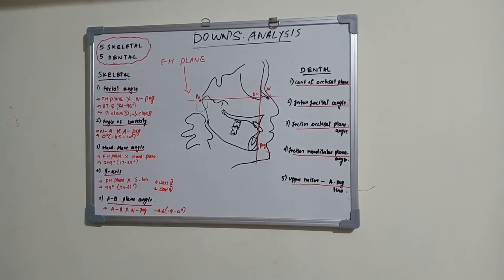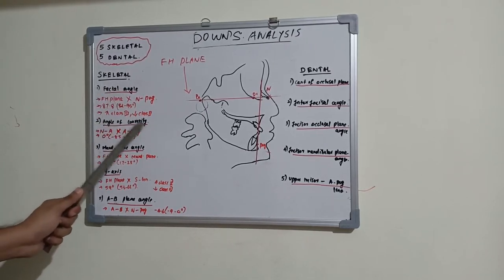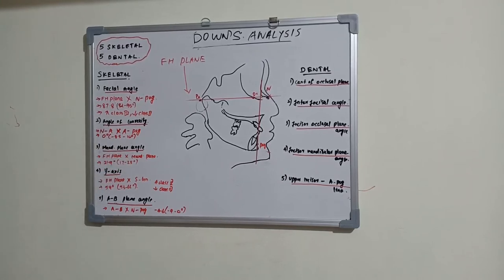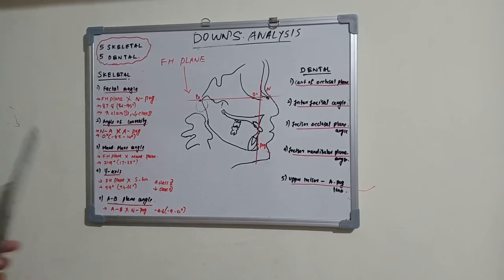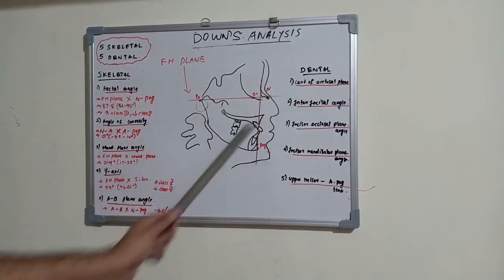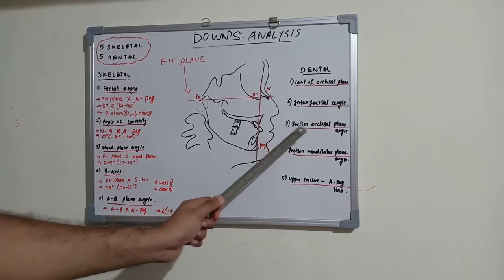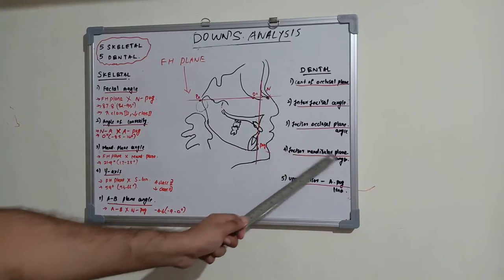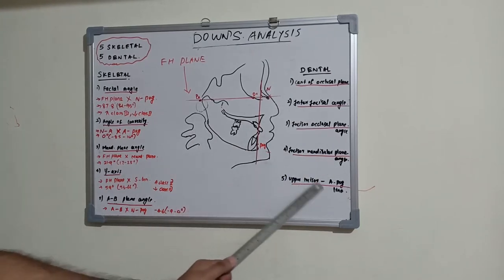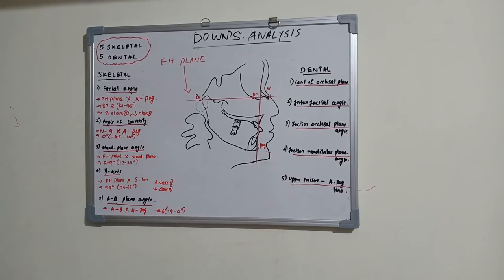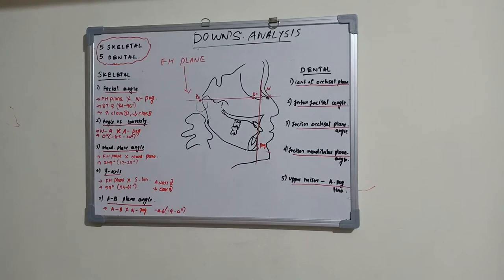The five skeletal parameters are: facial angle, angle of convexity, mandibular plane angle, Y-axis (also known as growth axis), and AB plane angle. The five dental parameters are: cant of occlusal plane, inter-incisal angle, incisor occlusal plane angle, incisor mandibular plane angle, and upper incisor to A-pogonion line. Let's go through each one.